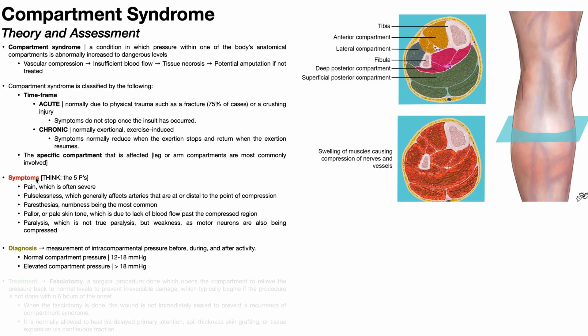In terms of the symptoms of compartment syndrome, we think of the five Ps. Pain — often severe — in the area where the increased pressure resides. Pulselessness, which is generally going to affect the arteries at the level of the pressure or distal to the point of compression. For compression midway down the lower leg, the pulses we might expect to be diminished or totally absent are the dorsalis pedis pulse and the posterior tibial pulse.